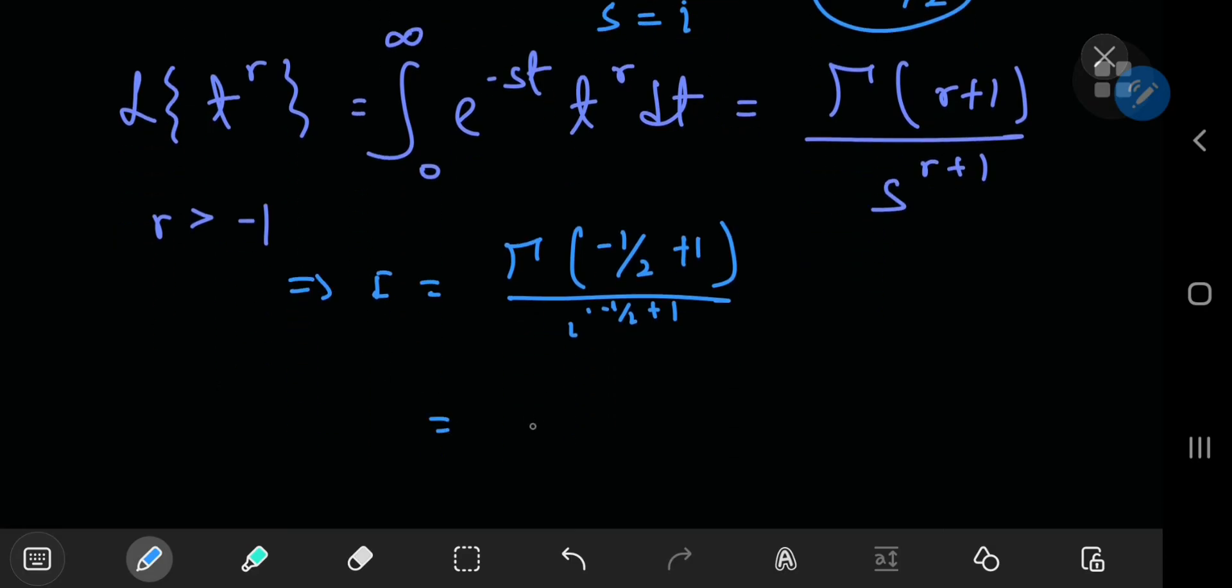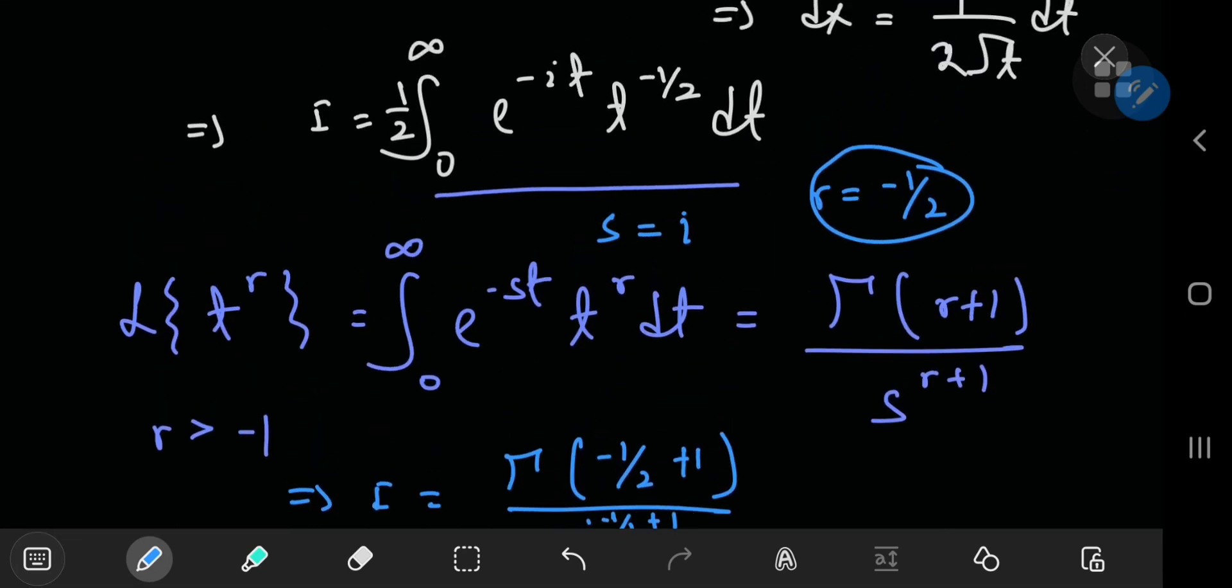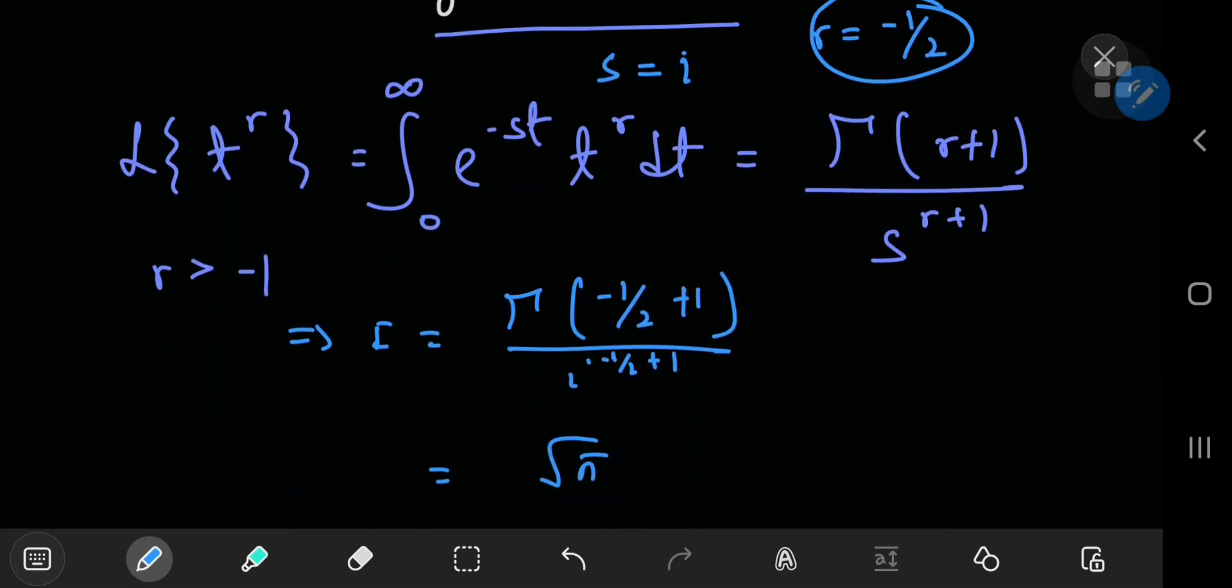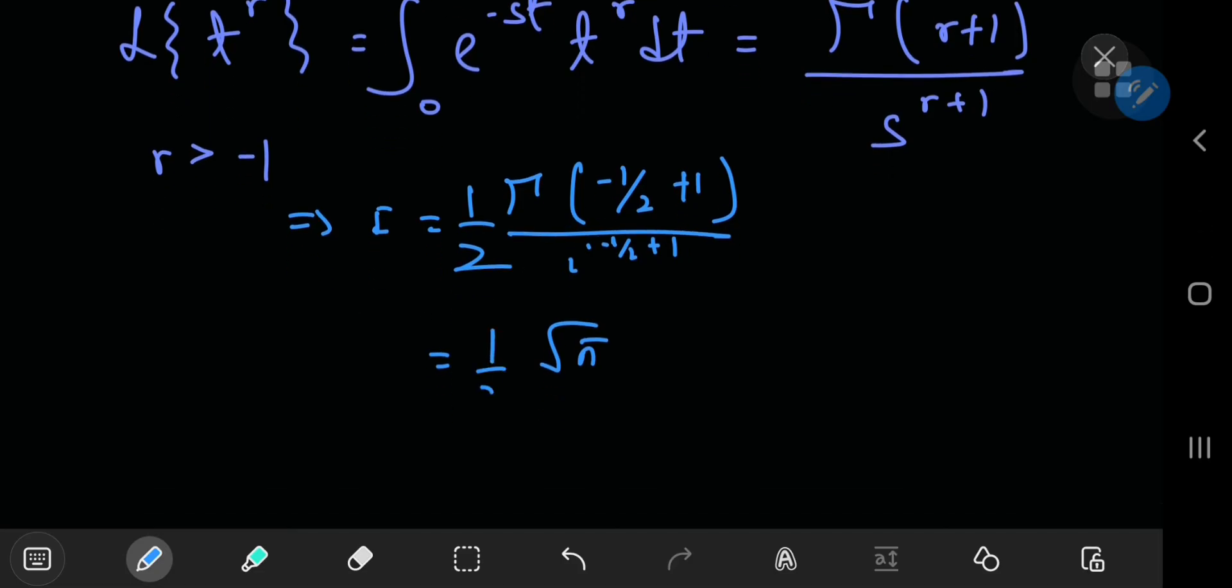In other words, this is actually the gamma function of one by two. And we know how that turns out, right? This is in fact the square root of pi. Oh wait, I'm forgetting something. I forgot this factor of one by two. Aha, not today. So you have one by two out here divided by the square root of i.